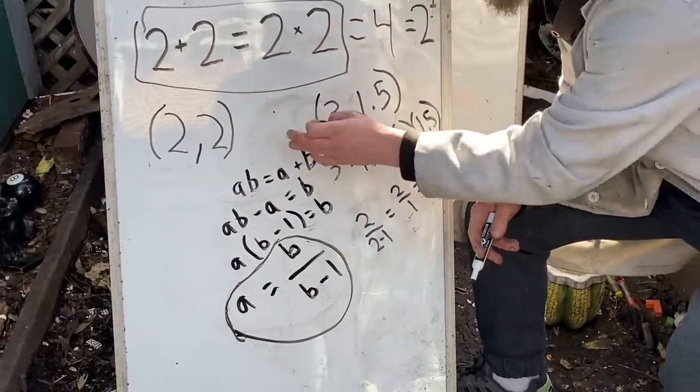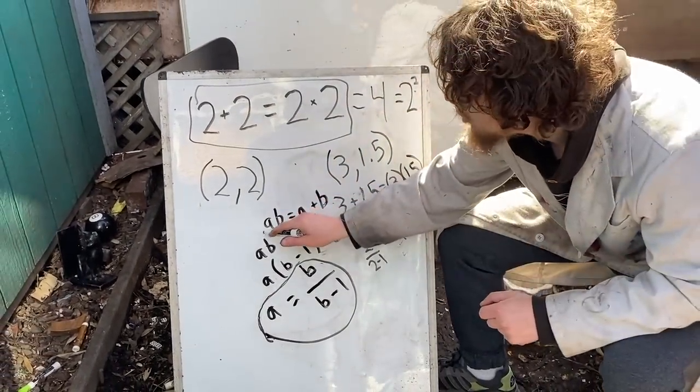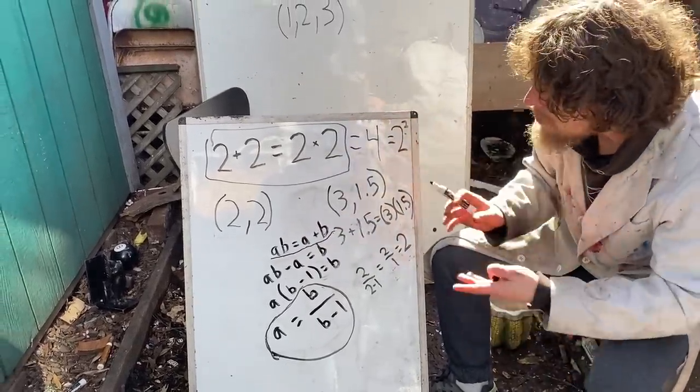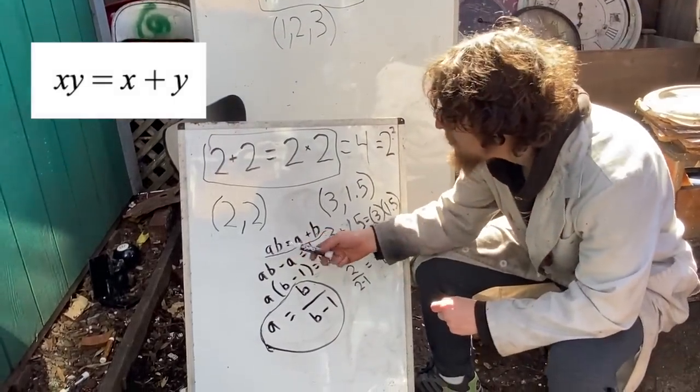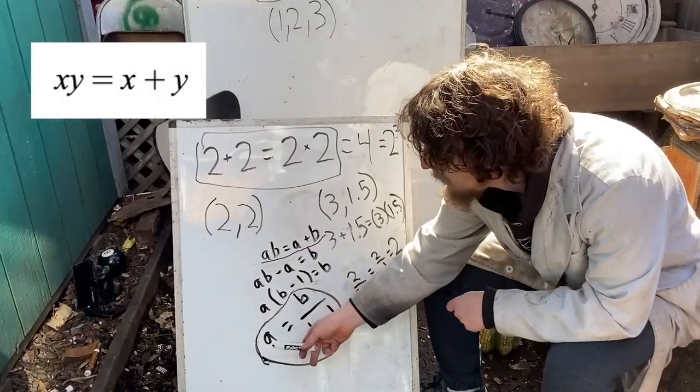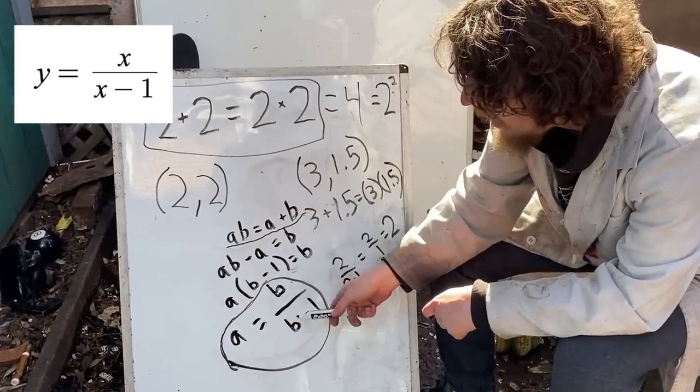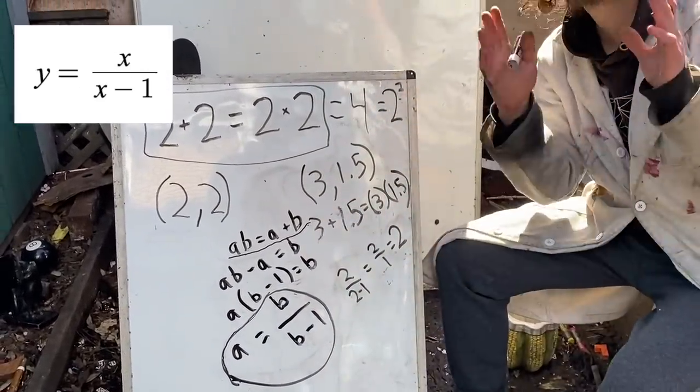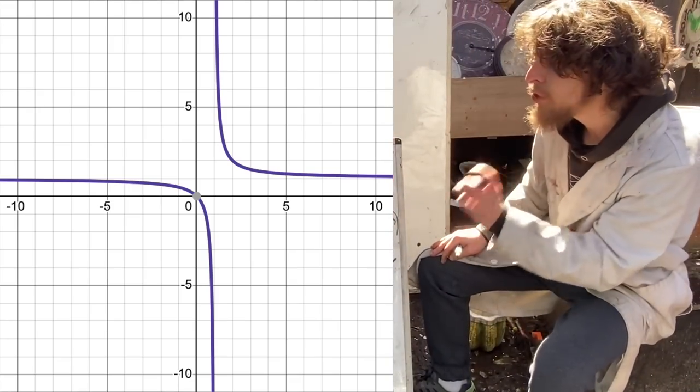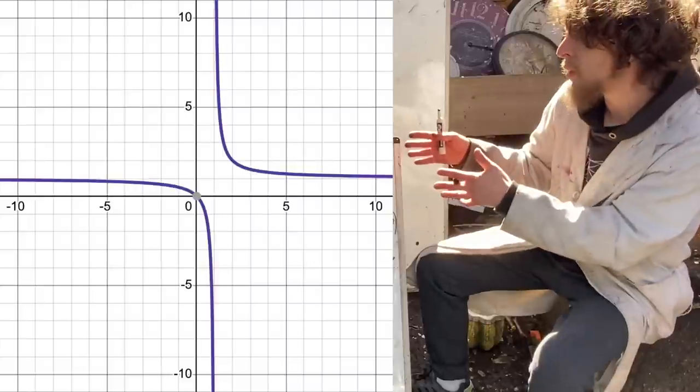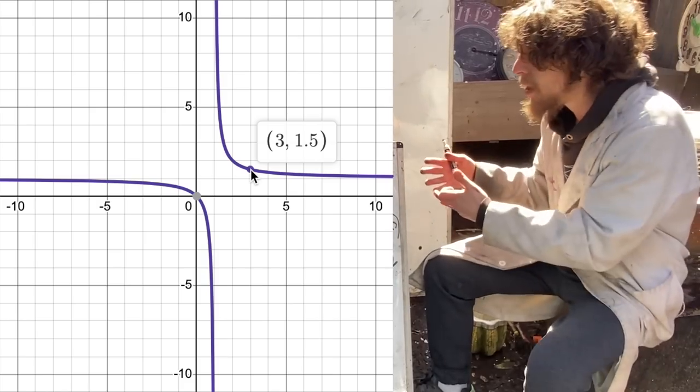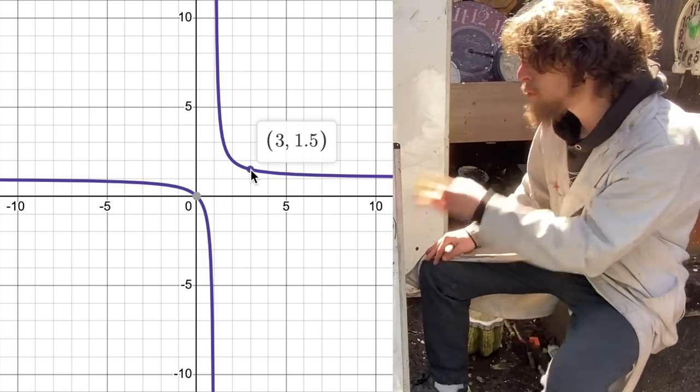And we can also see this in action on a graph. If I turn these a's to x's and these b's to y's, or vice versa, and graph x times y equals x plus y, or equivalently I could have graphed something like y equals x over x minus 1, here's what I would get. We can see that I have two curves of possible solutions. And any point on one of those curves, the x coordinate combined with the y coordinate makes a pair that has the same product and sum.